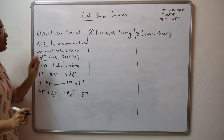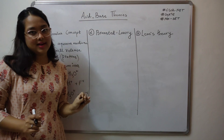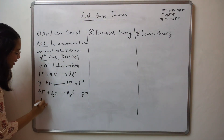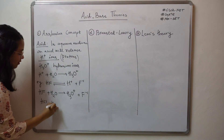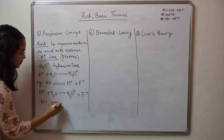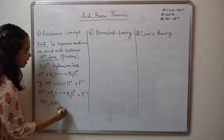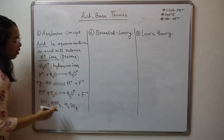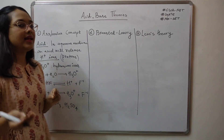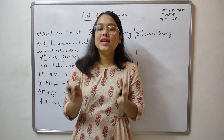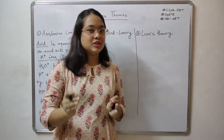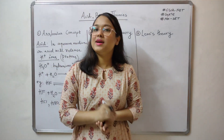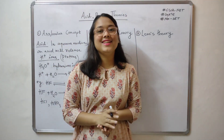This is the definition of an acid according to the Arrhenius concept. You can have many more examples like HCl (hydrochloric acid), HNO3 (nitric acid), and sulfuric acid. All of these, when added to water, will dissociate releasing H+ protons, or you can call them hydronium ions.